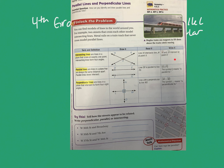This can also be written in notation. Line HI is written this way. Line HI and line JK intersect at point X.